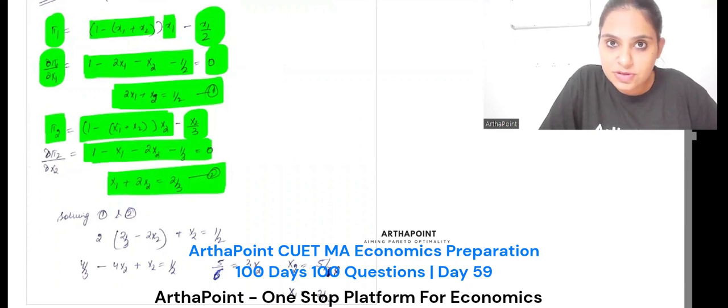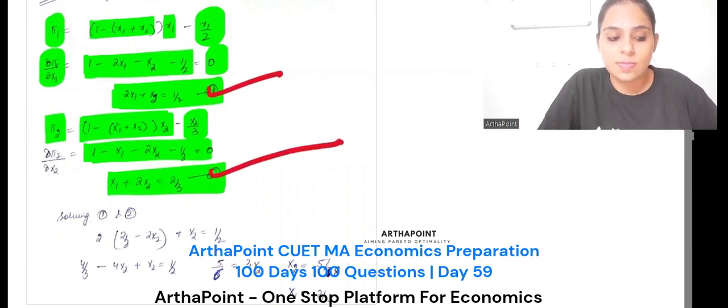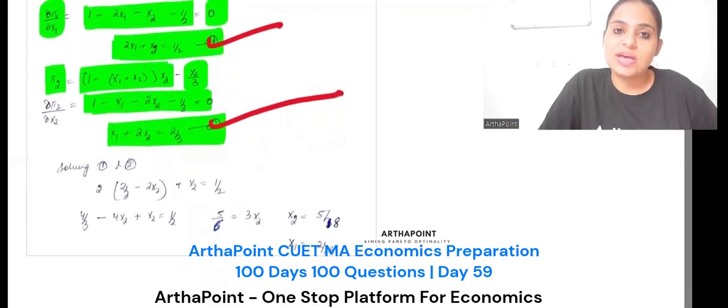So you found the profit function, differentiated them, and got your profit maximizing equations. This is equation 1, this is equation 2. Solve these two equations simultaneously.